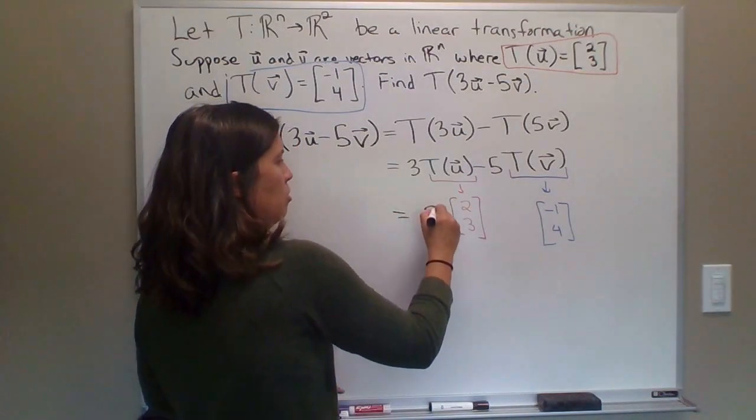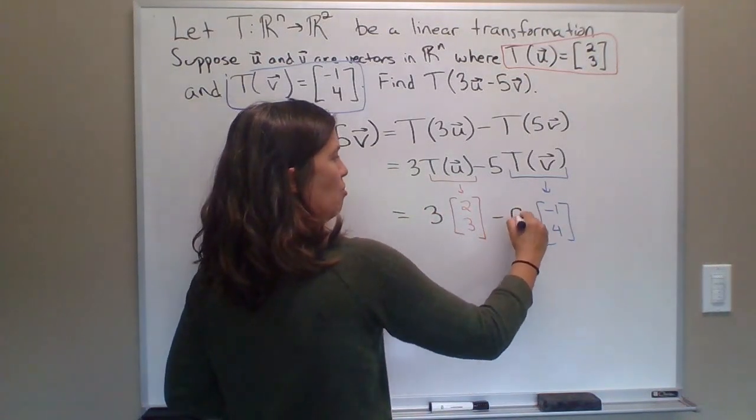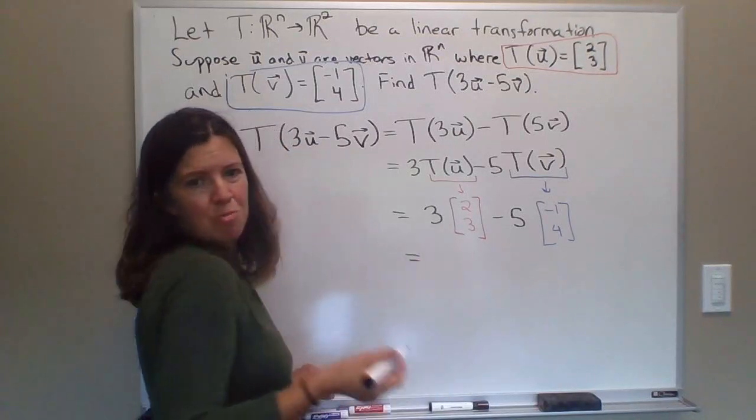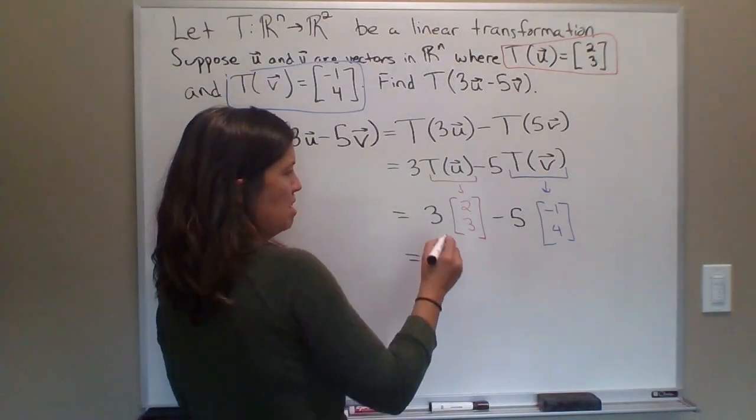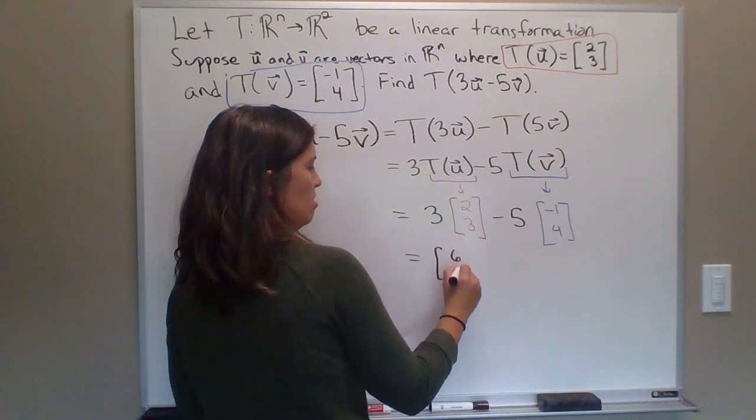So this is equal to 3 times this vector. There's your T(u) minus 5 times this vector. There's your T(v). And now we just perform the vector operations, which is pretty simple. So just multiply each part here times 3. So this is [6,9].